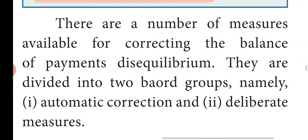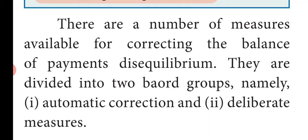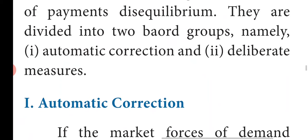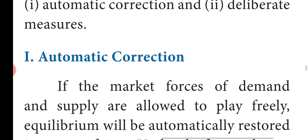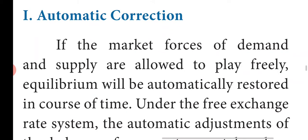There are a number of measures available for correcting the balance of payment disequilibrium. They are divided into two broad groups — namely automatic correction, and second, deliberate measures. First, we are going to know about automatic correction.